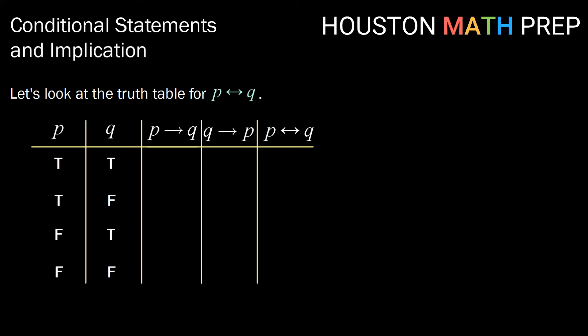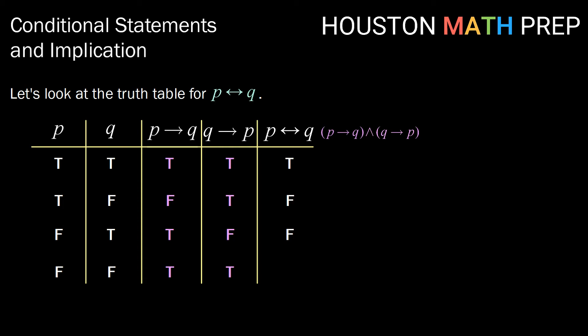Beginning with our usual organization, P implies Q is true everywhere except when we have true then false. Now looking at our columns the other direction, Q implies P: true, true gives us true; false, true — anytime the first statement is false it doesn't matter what the second statement is, we get true; true, false is our only broken promise, so we get false; and false, false gives true. Now remembering that our biconditional is a conjunction of our two conditional statements — P implies Q and Q implies P — this will only be true when both statements are true. So we get true, false, false, and true.